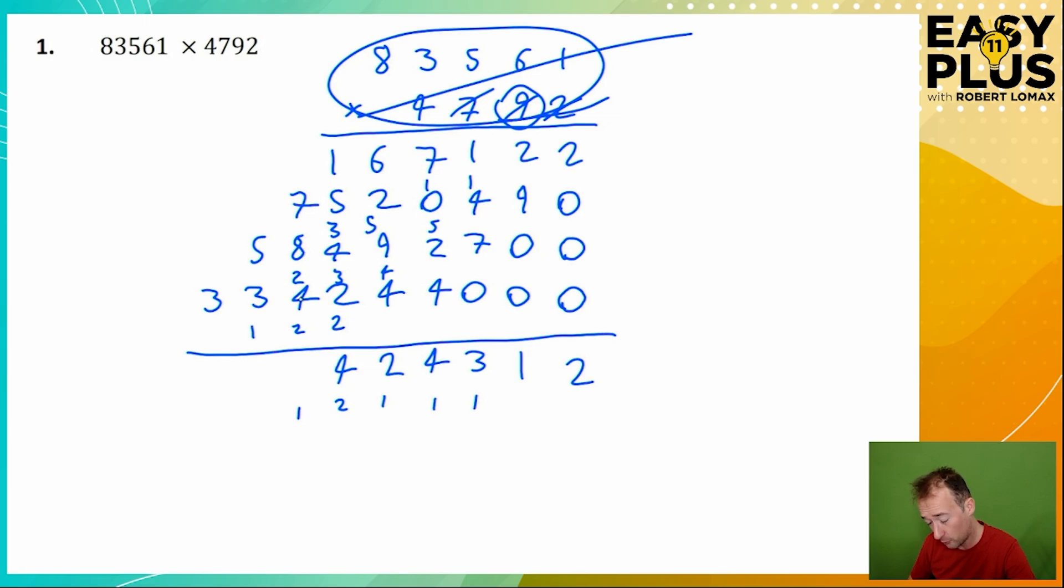7 plus 8 is 15, plus 4 is 19, plus the carried 1 is 20. 5 plus 3 is 8, plus the carried 2 is 10. 3 plus the carried 1 is 4.